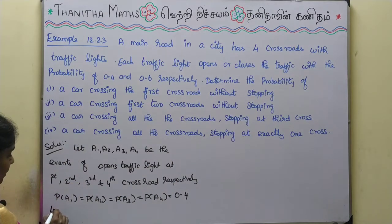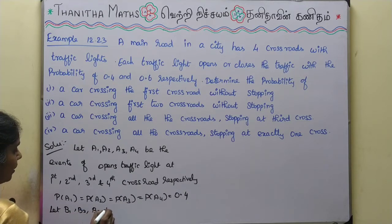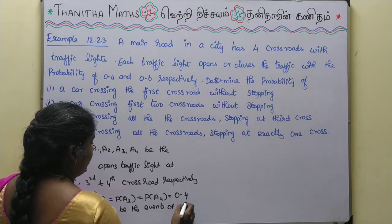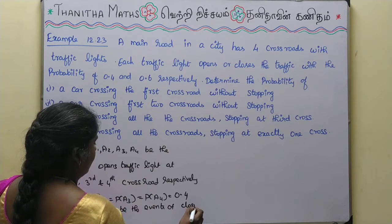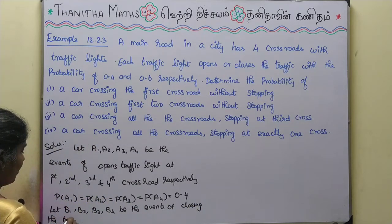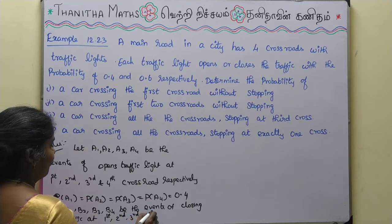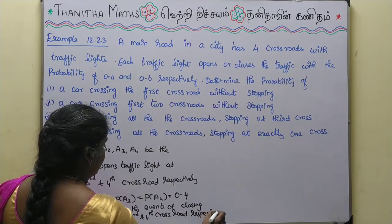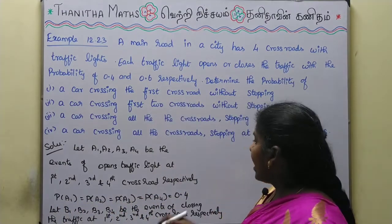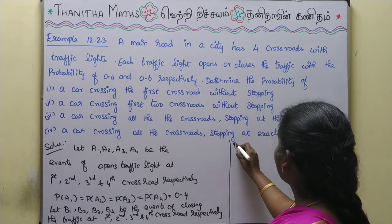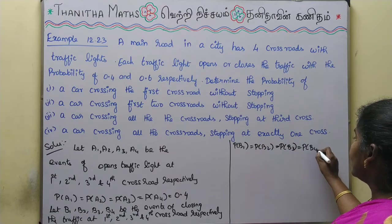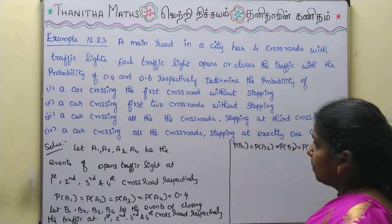Let B1, B2, B3, B4 be the events of closing the traffic light at the 1st, 2nd, 3rd, and 4th crossroad respectively. The probability that the traffic light closes is 0.6. So P(B1) = P(B2) = P(B3) = P(B4) = 0.6.